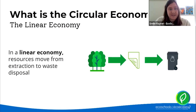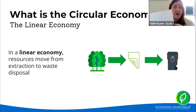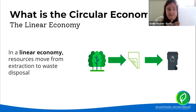Let's look at the life cycle of a piece of paper. In a linear economy, trees would be cut down to produce a sheet of paper, the paper would be used one time, and then it would be thrown into the waste bin. Every time we need more paper, more trees would need to be cut down.